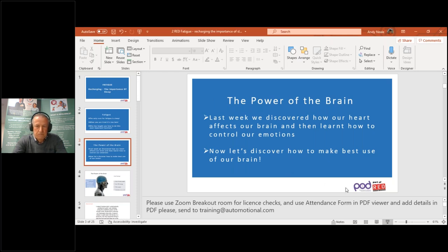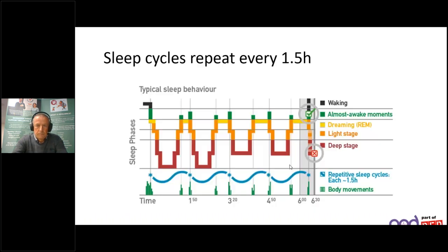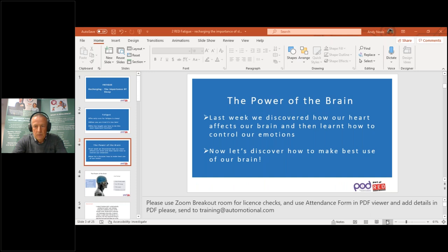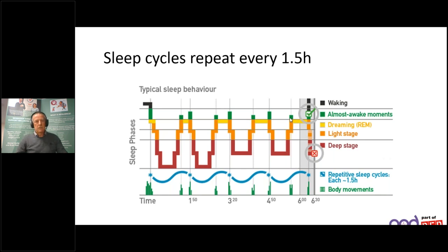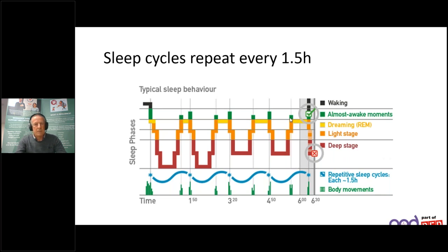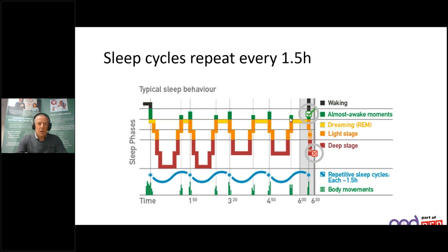There we have it. So sleep cycles — they repeat every 1.5 hours, or 90 minutes, as we'll come back to shortly. Typical sleep behaviour goes through four stages. We have waking or almost awake, dreaming which is the REM stage, light sleep and deep sleep. We'll cover what each one does and how important it is as we go through.